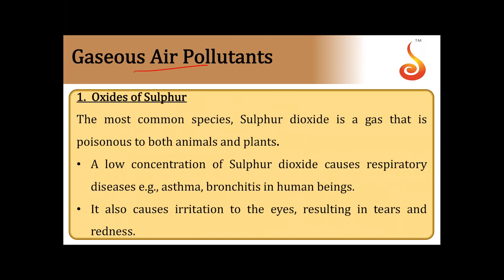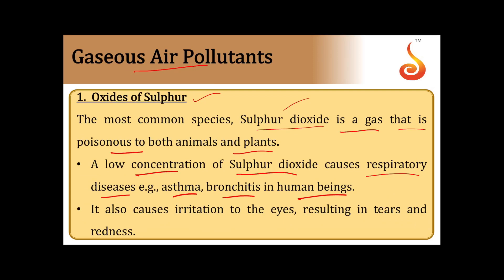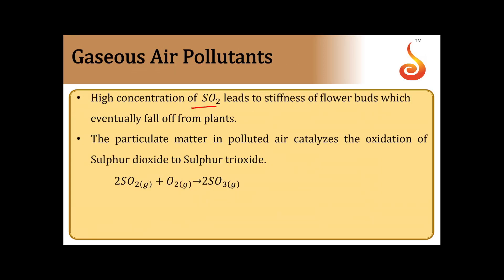Among oxides of sulfur, sulfur dioxide is the most common species and is a poisonous gas to both animals and plants. Low concentrations of SO2 cause respiratory diseases such as asthma and bronchitis in human beings. It also causes irritation to the eyes, resulting in tears and redness. Higher concentrations lead to stiffness of flower buds, which eventually fall off from plants.